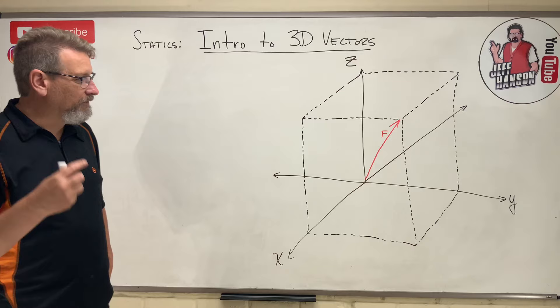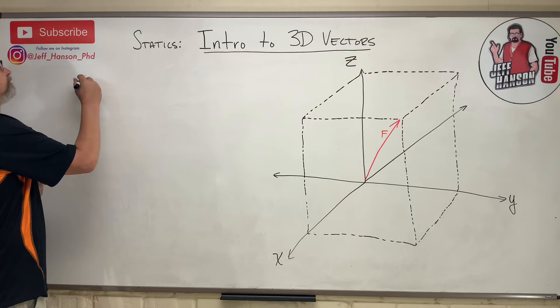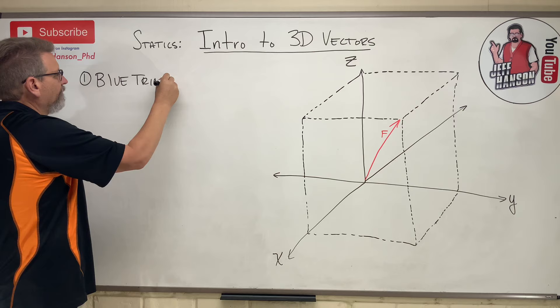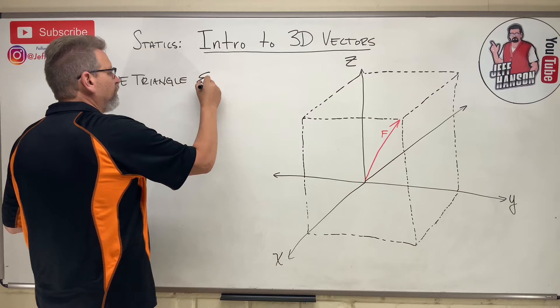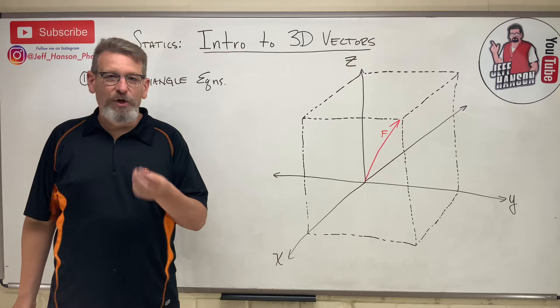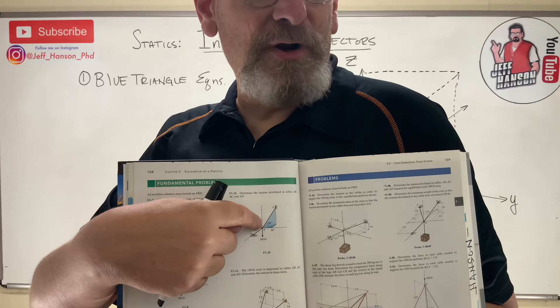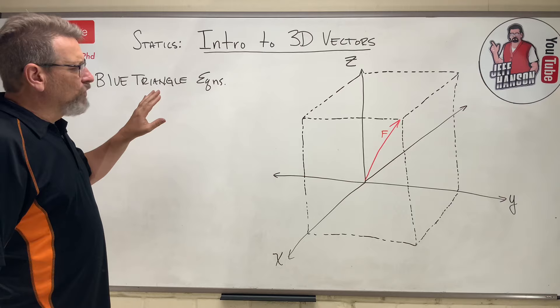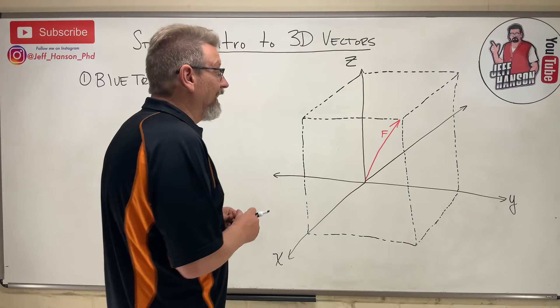There are three ways a vector can be expressed in 3D. This video is about way number one, and I call this the blue triangle equations. The reason I call it that is because in the book, these problems are expressed with little blue triangles. So this particular method I just call it blue triangle equations — you won't find that in the book, I made that up. I'm going to show you how to derive them and how to use them, and you're going to be like, man, that was so easy.